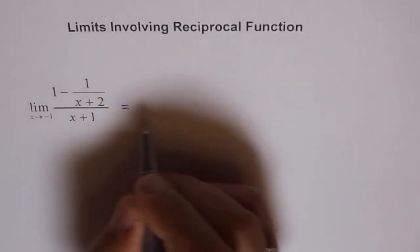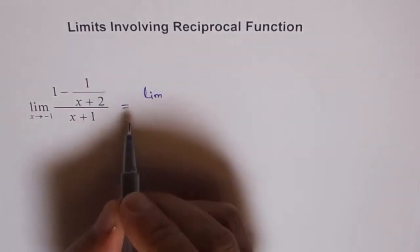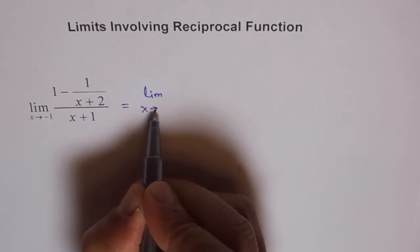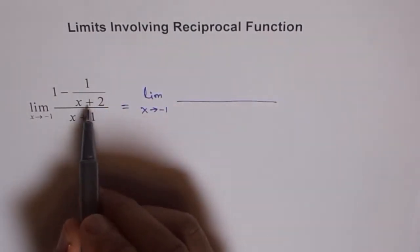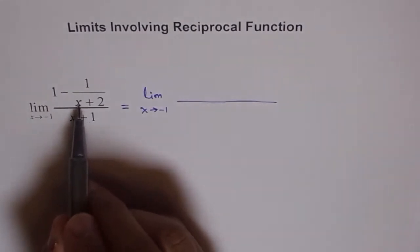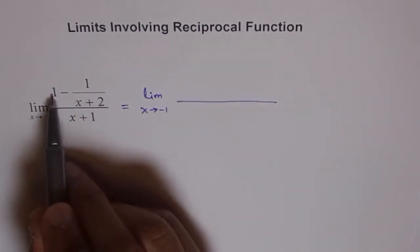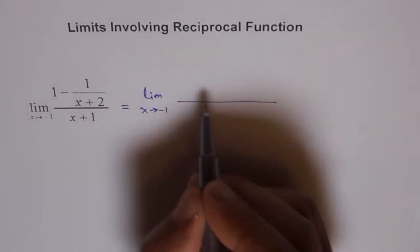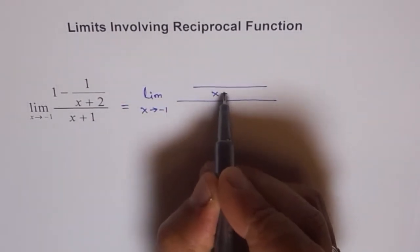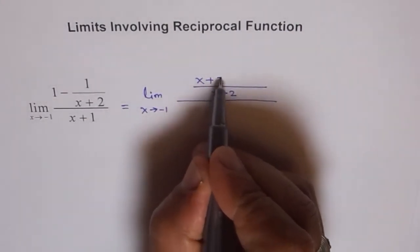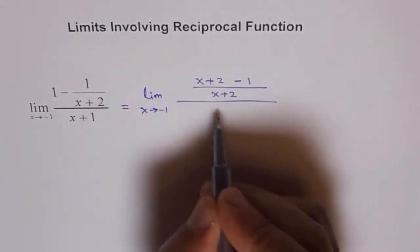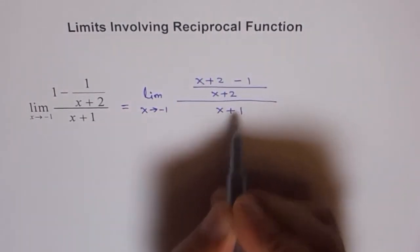So we have this function limit x approaches minus 1 and in the numerator we can have common denominator of x plus 2. That means this can be multiplied by x plus 2. We have common denominator of x plus 2 and this gets multiplied by x plus 2. So we get x plus 2 minus 1 and the denominator with us is x plus 1.